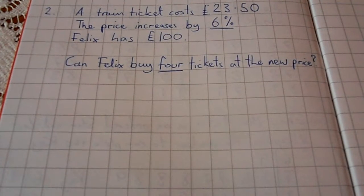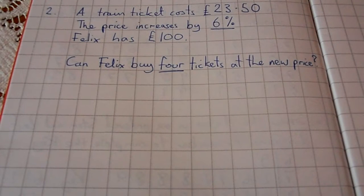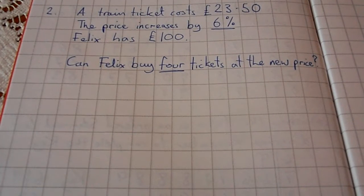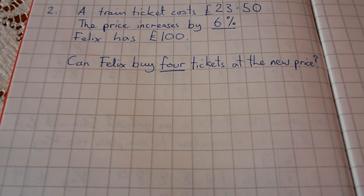Question 2 on the Unit 1 Higher June 2011 paper says: A train ticket costs £23.50. The price increases by 6%. Felix has £100. Can Felix buy four tickets at the new price?